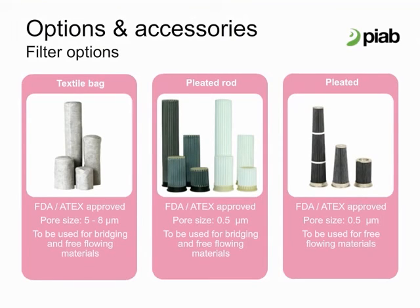The filter type is a key component for optimum vacuum conveying performance. PIAB offers three different filter types to match a wide range of applications. Our most basic filter, the textile bag, is best for granular or large particle materials and has a minimum particle size of 5 microns. The pleated rod and pleated filter have a minimum particle size of 0.5 microns and are generally reserved for finer powder materials. The selection between the two 0.5 micron filters is based on the material and the amount of airflow needed. All of our filters are approved to FDA standards and can all be washed to extend filter life.